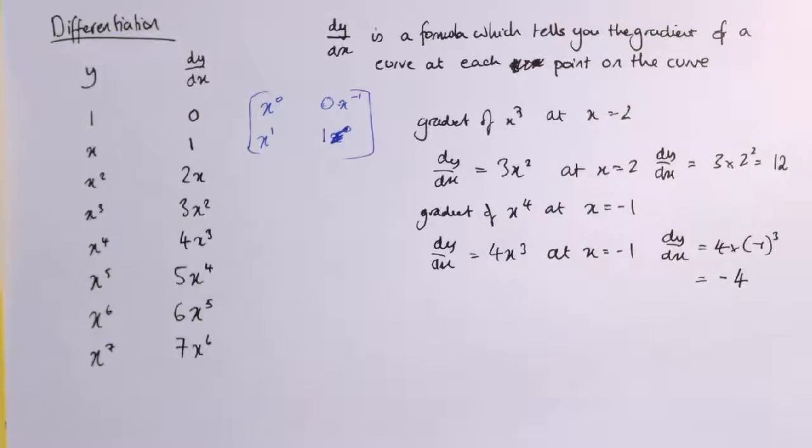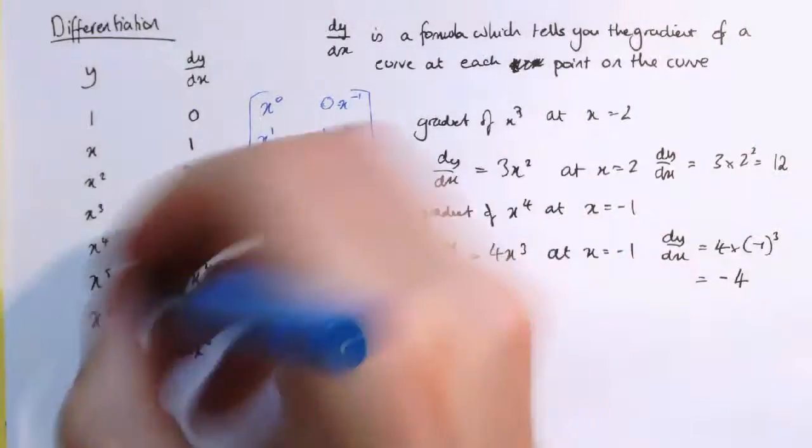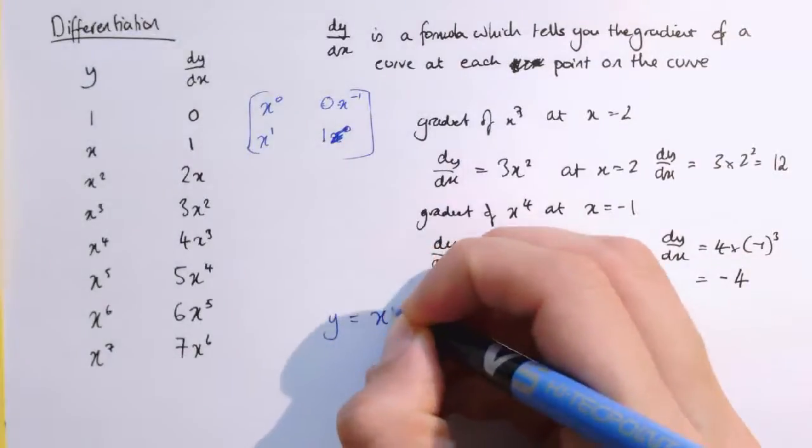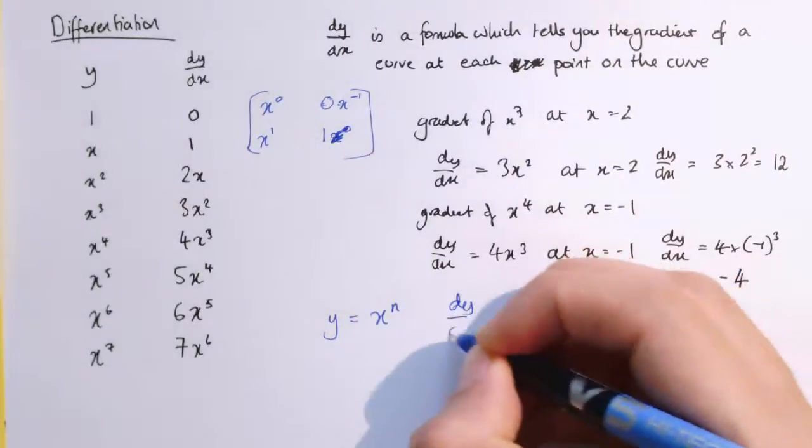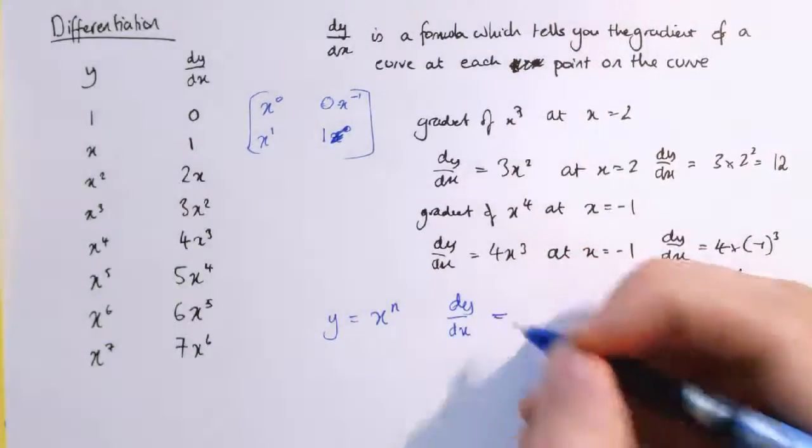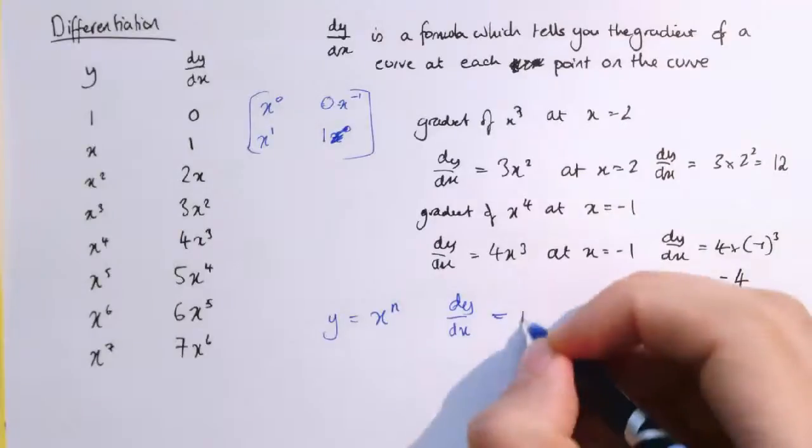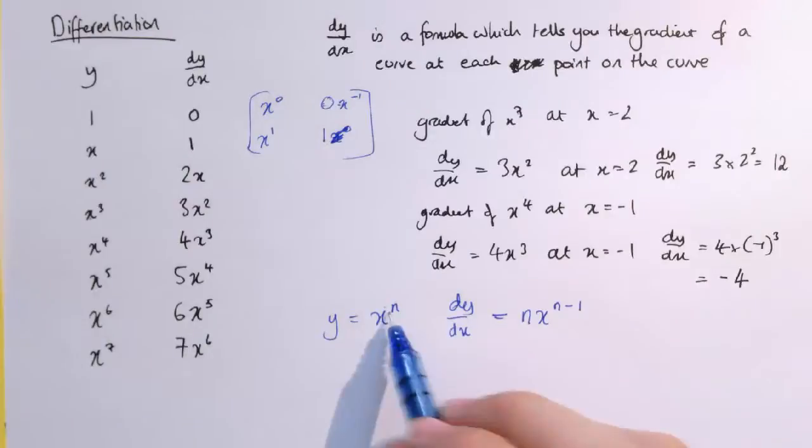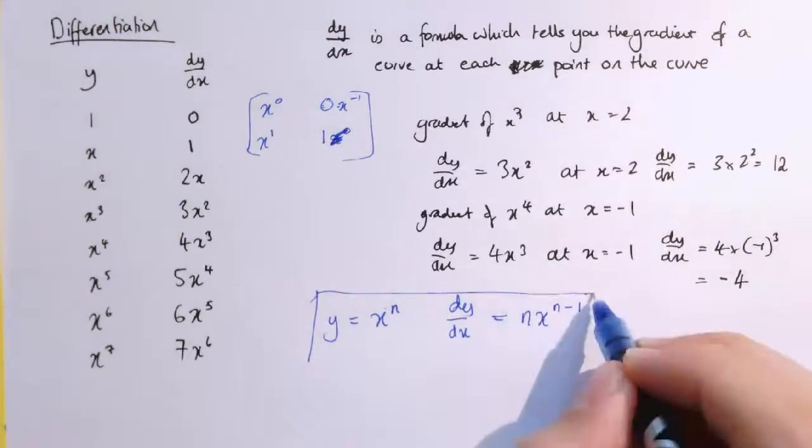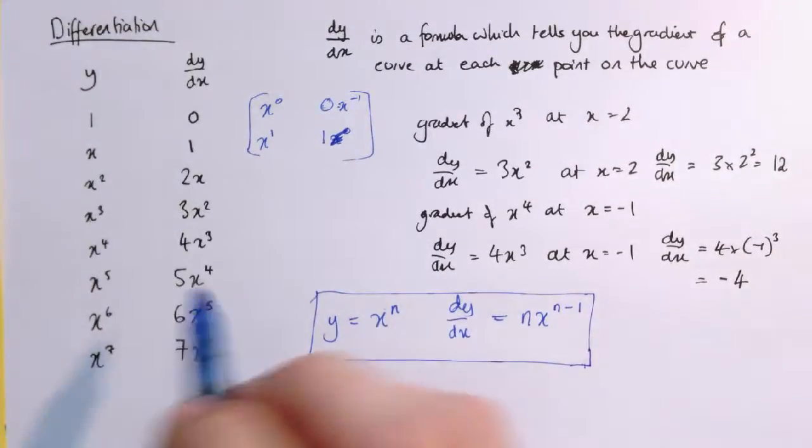So this is a really useful rule, and it's worth just writing it down in general. So actually, what we've seen here is if we've got y equals x to the n, where n is some number, then dy/dx, the gradient formula, is equal to n times x to the n minus 1, whatever that value is, it comes out in front, and n reduces to n minus 1. And what we can do from this result is actually to build up some rules for differentiating combinations of these functions as well.